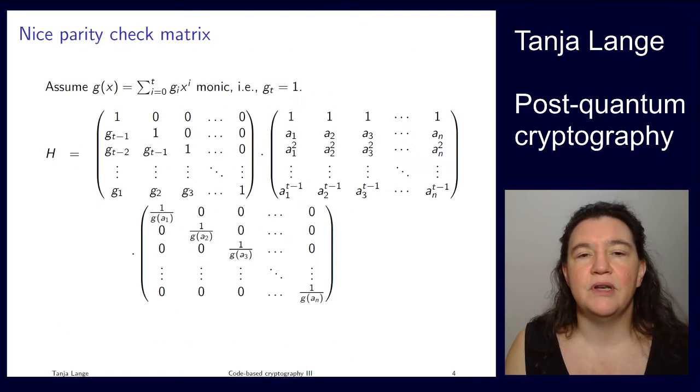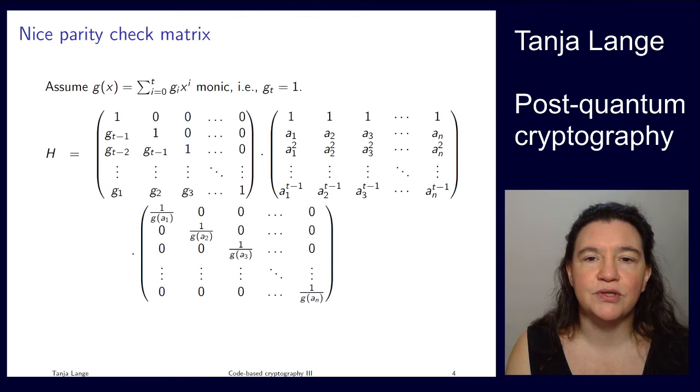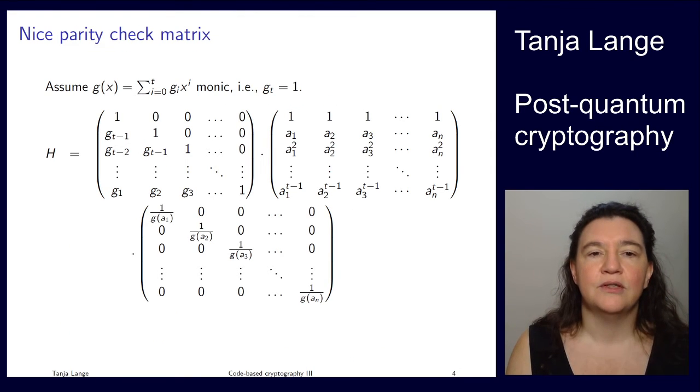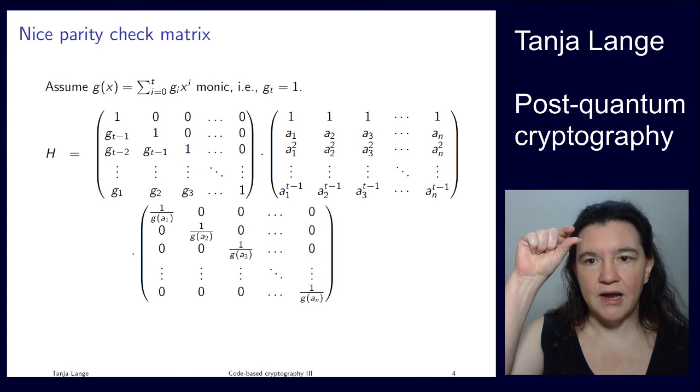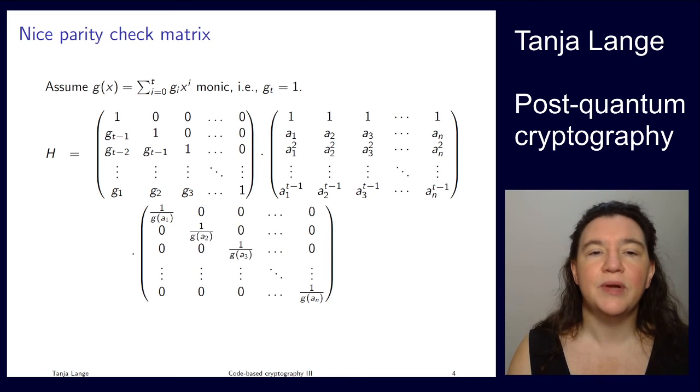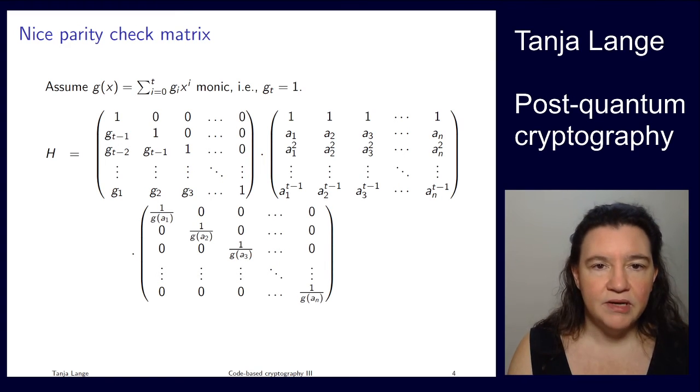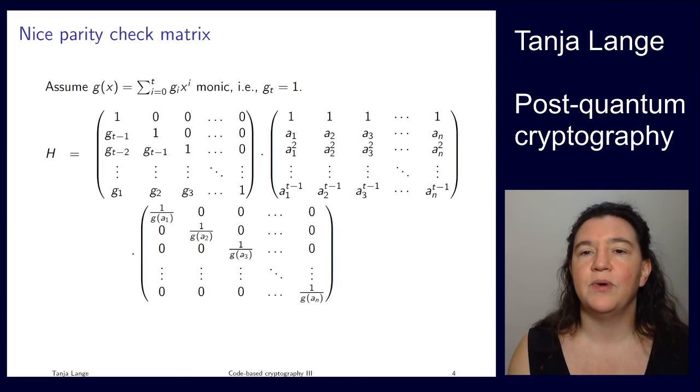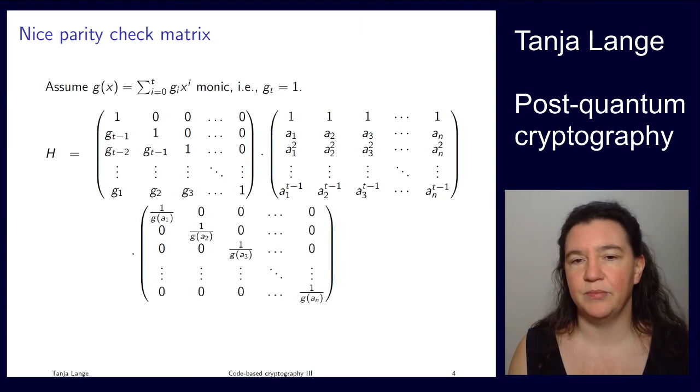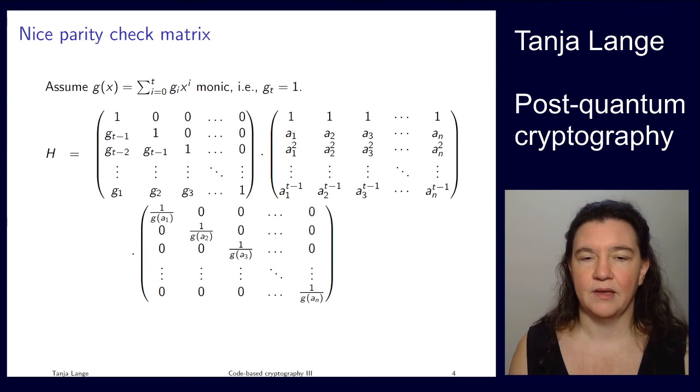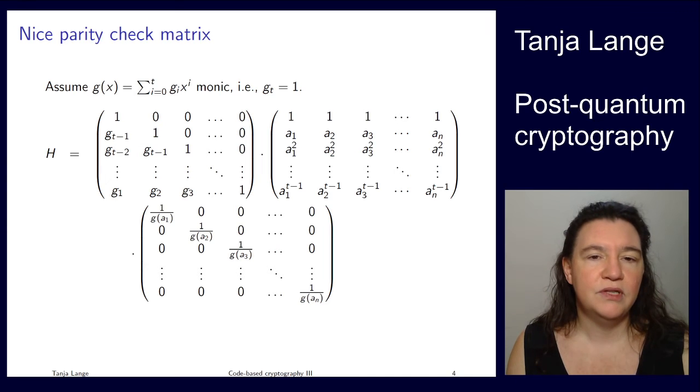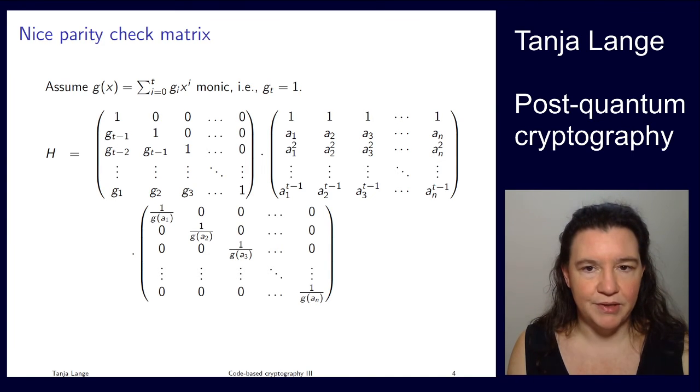I promised you a nice view of the parity check matrix. So if we write it out, so now going back again to the expression of the ci divided by x minus ai, then we can justify this view here. So the gi's come in from the extended Euclidean algorithm, and the g of ai as well. And then we have a Vandermonde matrix in the middle. Okay, so this would be the nice parity check matrix.